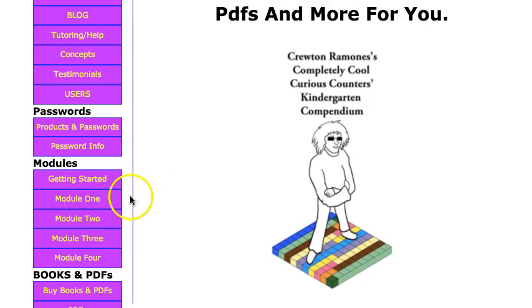And remember, each module, only $111 a piece, $40 a year. Or if you want to do subscription, click here on Password Info and you can buy a module. All right, there is the PDFs page here on Crouton Ramon's House of Math. Thanks for your time.